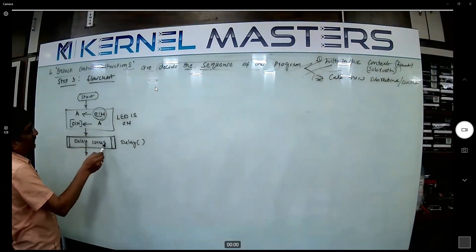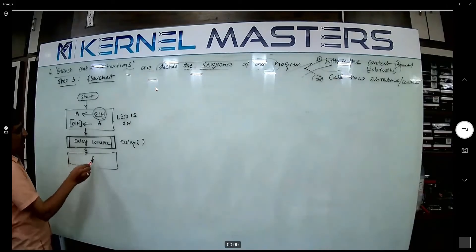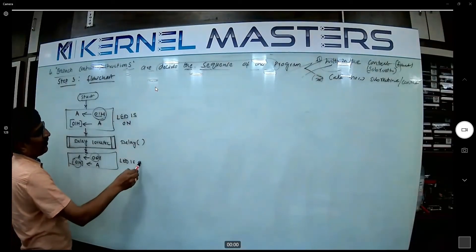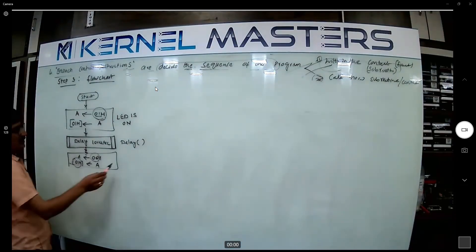Next one, delay 100 microsecond. The delay function call invoked. Now next one, tell me 00 and what? A value 01H. Then tell me LED is - tell me - off. Next tell me 100 microsecond delay.